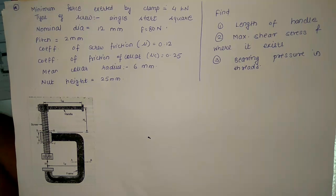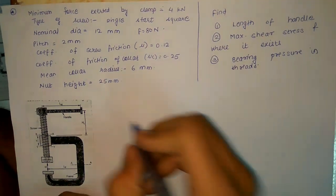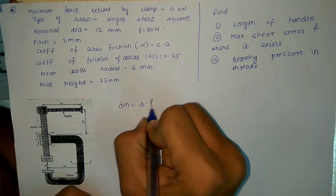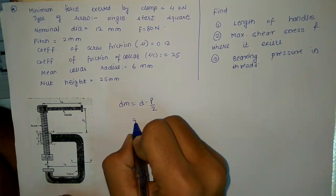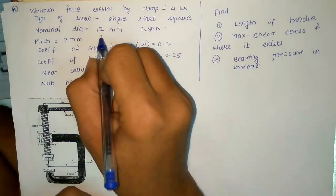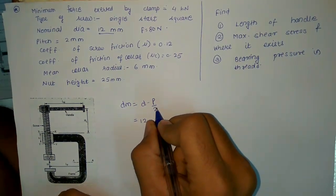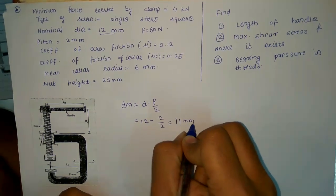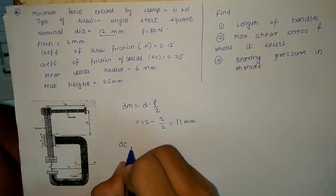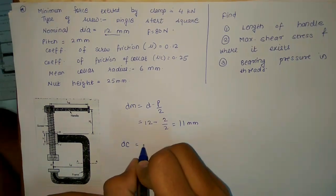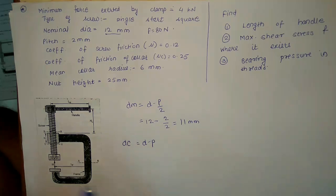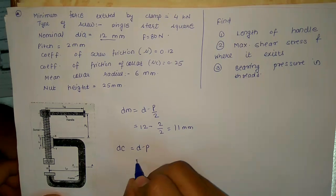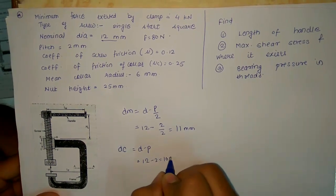Since this involves a power screw, the first step is to calculate the mean diameter: d_m = D − P/2 = 12 − 2/2 = 11 mm. Next, the core diameter: d_c = D − P = 12 − 2 = 10 mm.